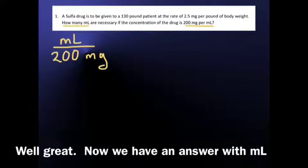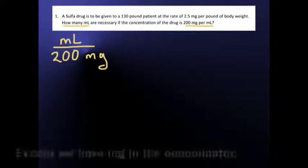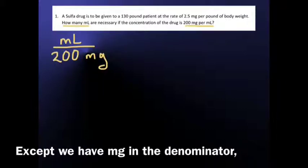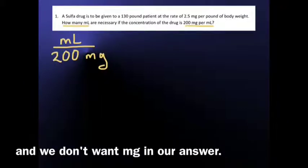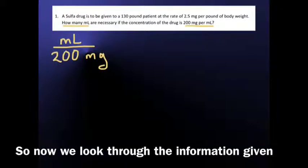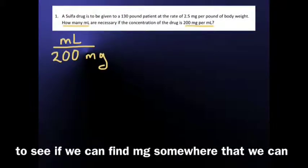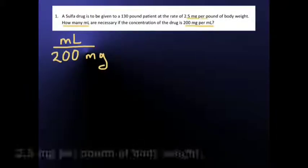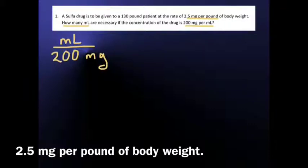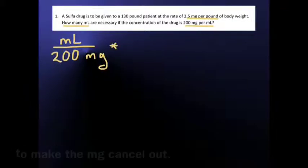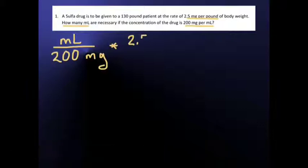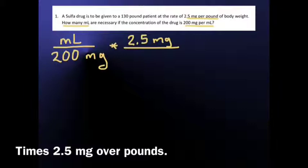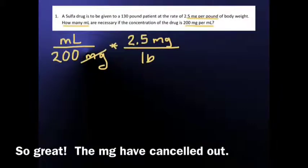Well great, now we have an answer with milliliters in the numerator. Except we have milligrams in the denominator, and we don't want milligrams in our answer. So now we look through the information given to see if we find milligrams somewhere that we can use to cancel out. And here we have milligrams, 2.5 mg per pound of body weight. So let's multiply by that to make the milligrams cancel out. So times 2.5 mg over pounds. So great, the milligrams have canceled out.